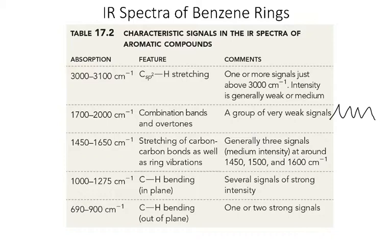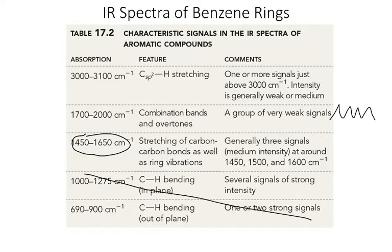We'd also expect to see carbon-carbon double bonds in the region of 1,450 to 1,650 wavenumbers, and this is certainly true when we have a benzene ring, although again, because of the symmetry, these may be relatively weak. The book talks about signals in the fingerprint region, but we really don't look at the fingerprint region — we're going to focus on signals in the diagnostic region of the IR spectrum.